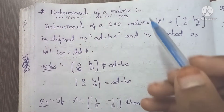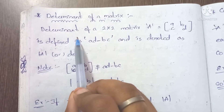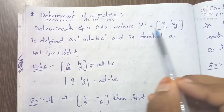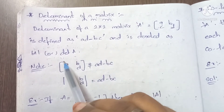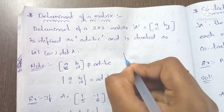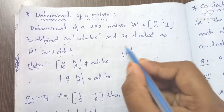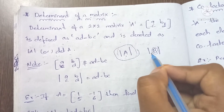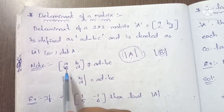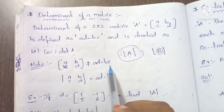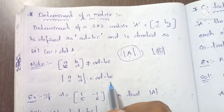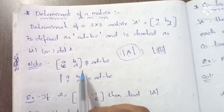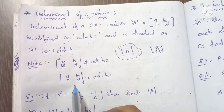The topic is the determinant of a matrix. The determinant of a 2×2 matrix A equals [a, b; c, d] is defined as ad minus bc, and it is denoted as det(A) or |A|. The determinant is only defined for a matrix; if you take a determinant of a matrix, you write two lines around it.